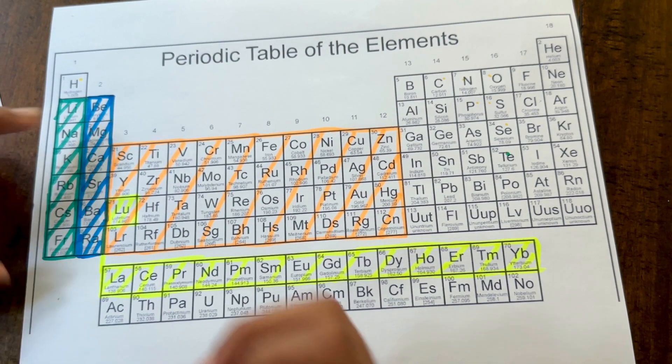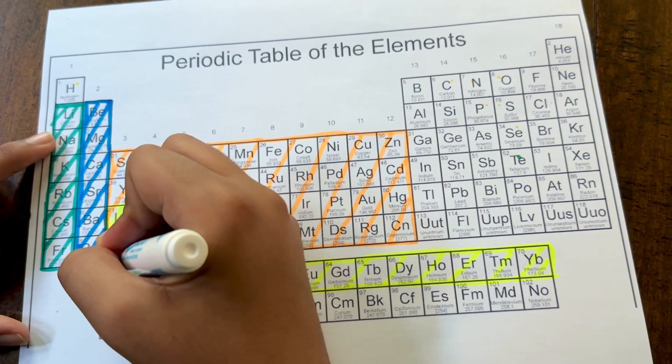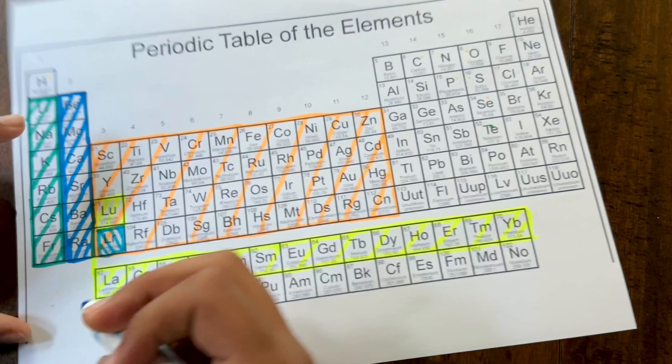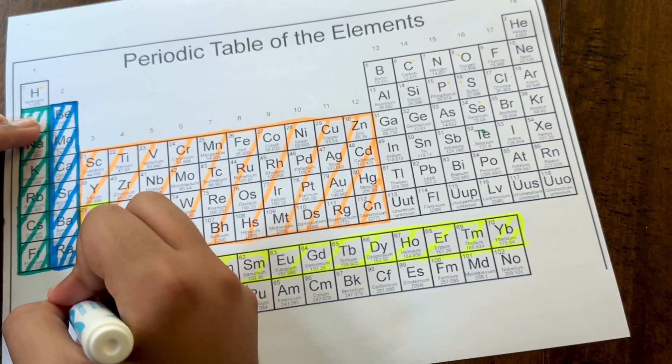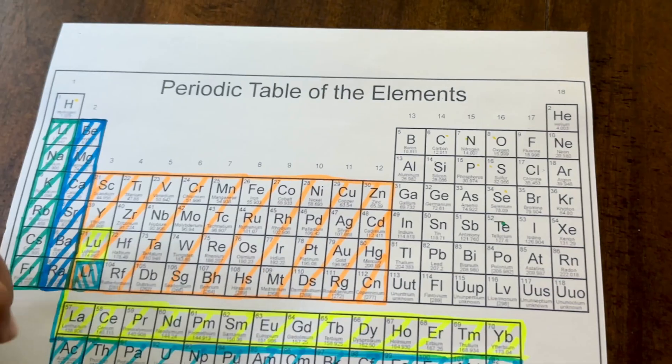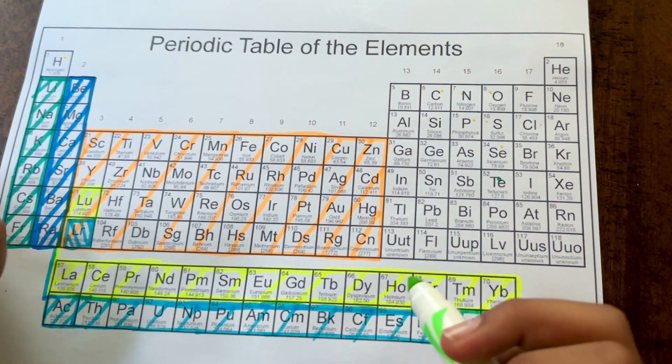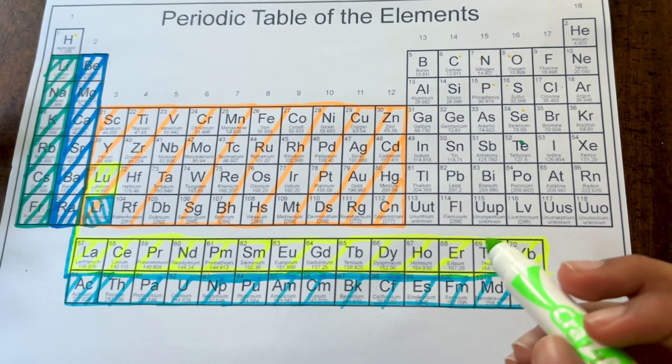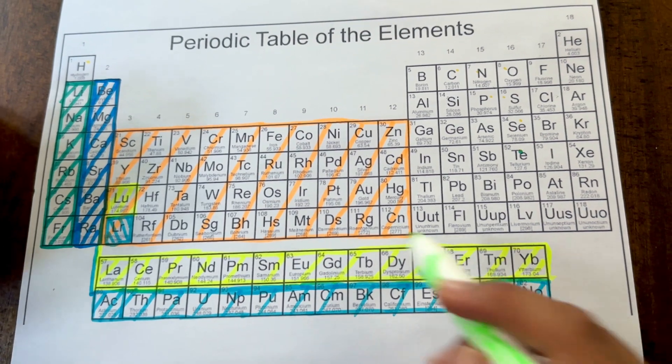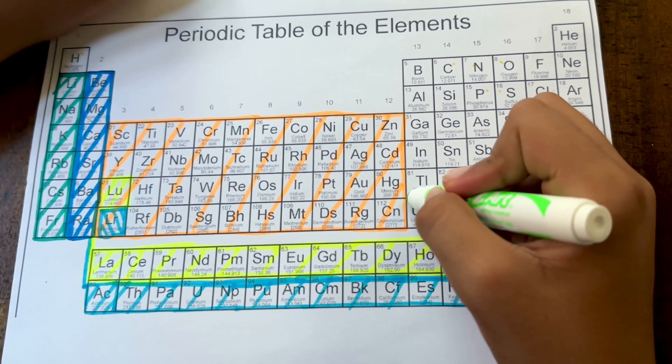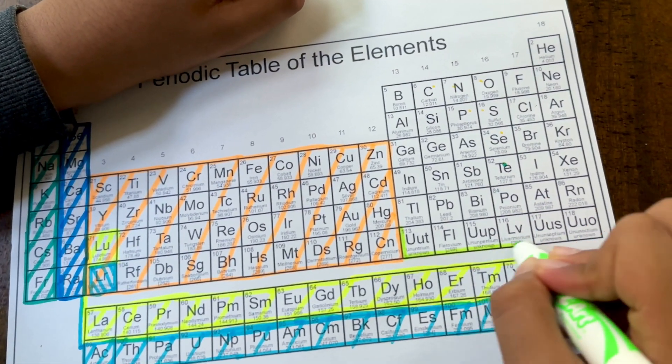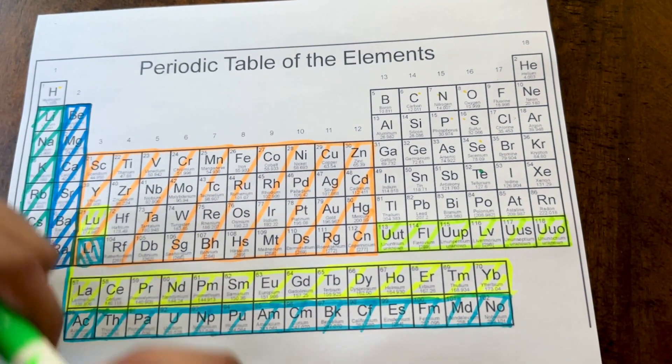Actinide starts here, so this element is actually actinide. This bottom section also is actinide. Now we're going to be going to these unknown metals. Scientists can't exactly classify these. They just couldn't figure out what these elements do. They're categorized as unknown elements, and it's kind of a work in progress.